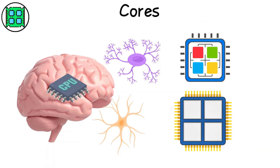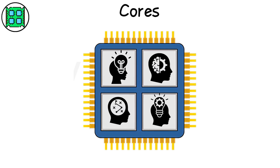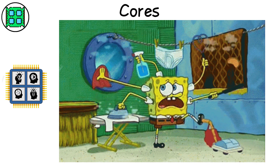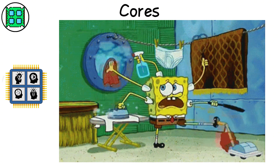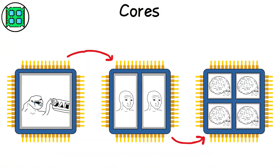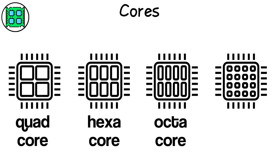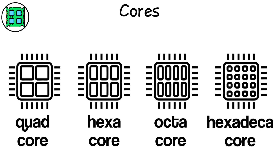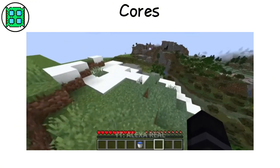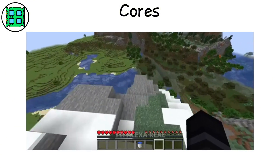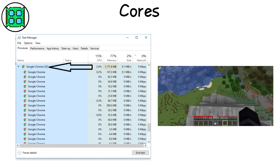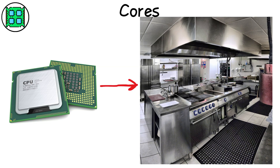Cores are like the brain cells of your computer's brain. One core can think about one thing at a time — kind of like trying to read a book while cooking noodles. Add more cores and suddenly your computer can do both at once. Modern CPUs have multiple cores: four, six, eight, even sixteen, each handling a separate task. That's why your game runs smoothly while Chrome eats half your memory in the background.